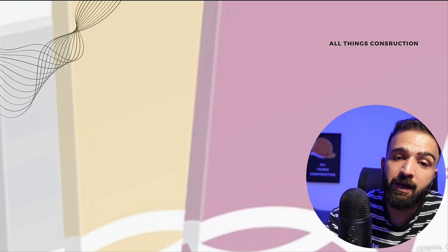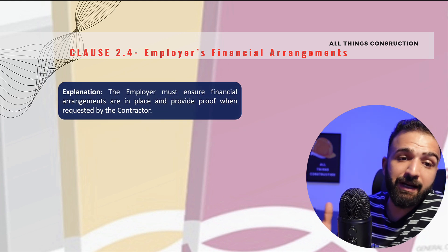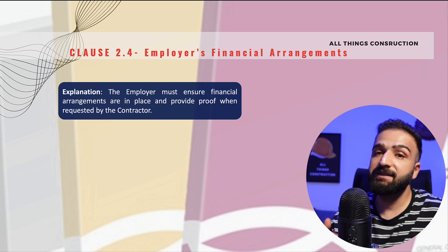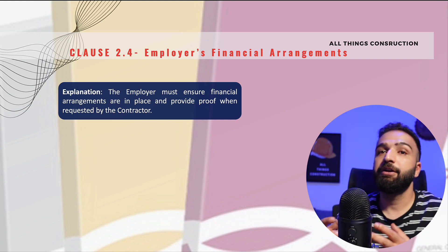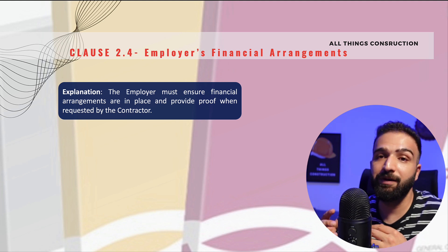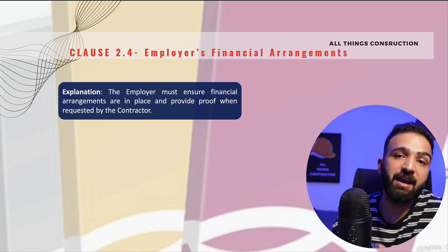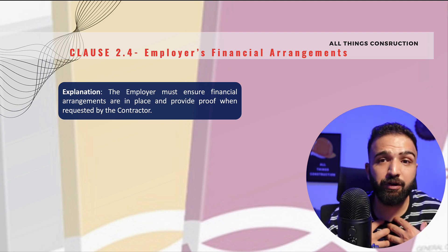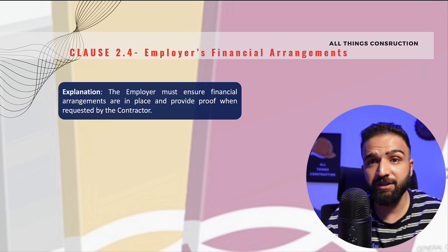Let's jump to Clause 2.4. Feel free to pause. The title of the clause is Employer's Financial Arrangements. What it effectively does is place an obligation on the employer to provide evidence of financial arrangements to finance the whole project.